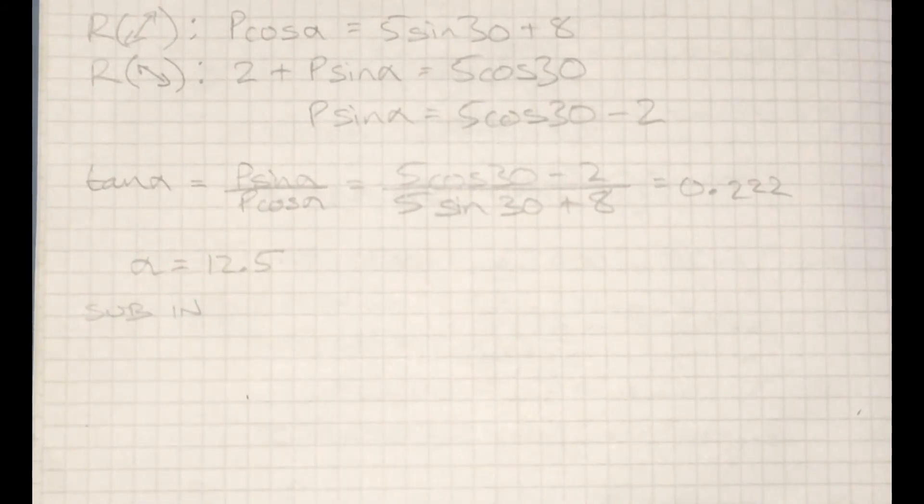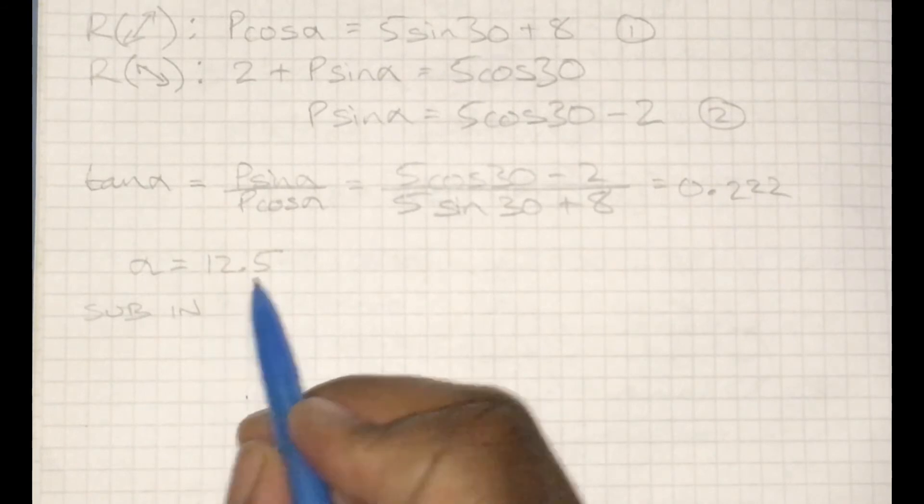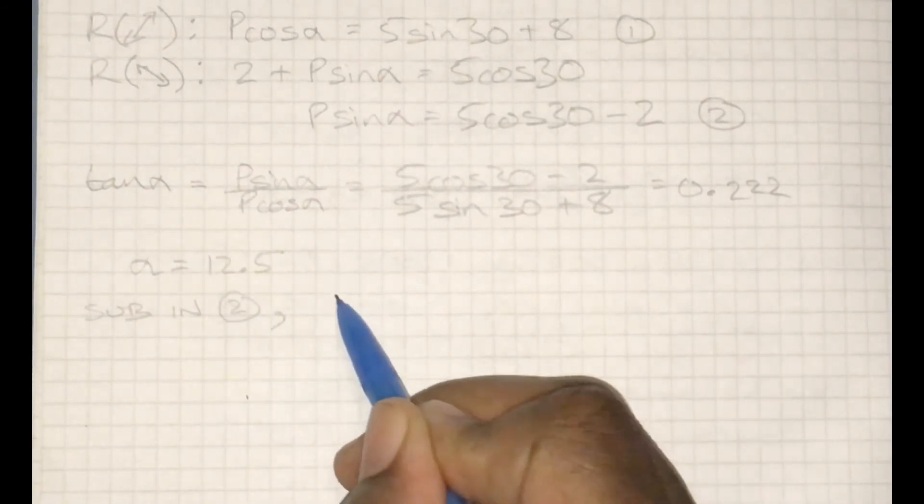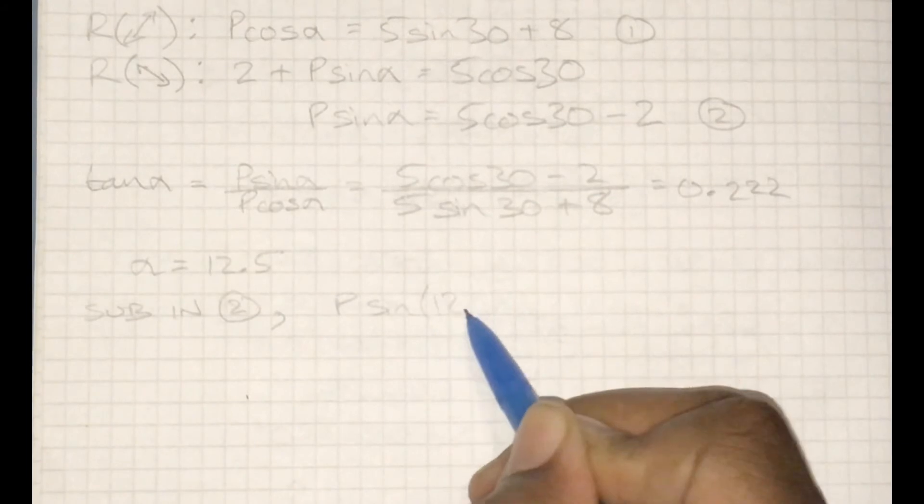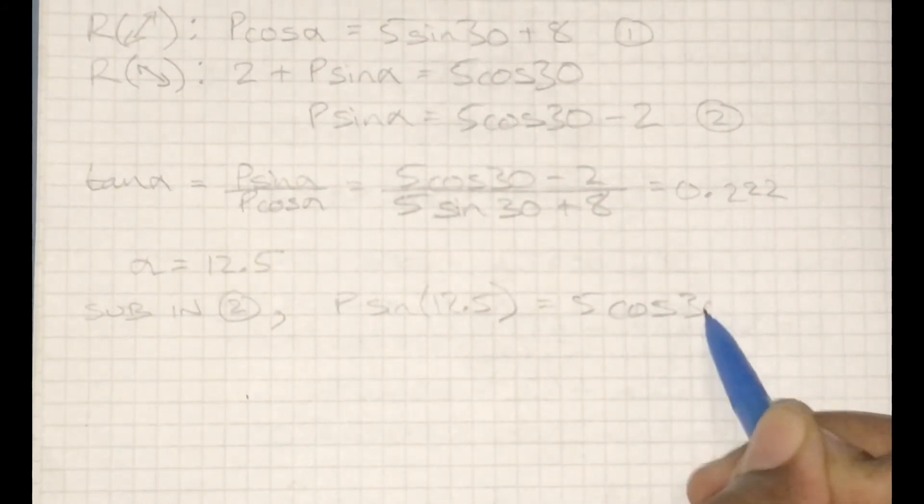Alpha is 12.5. Substituting into one of the earlier equations, I'll actually substitute it into the one that I've labelled 2. We get P sine of 12.5 equals 5 cosine 30 subtract 2.